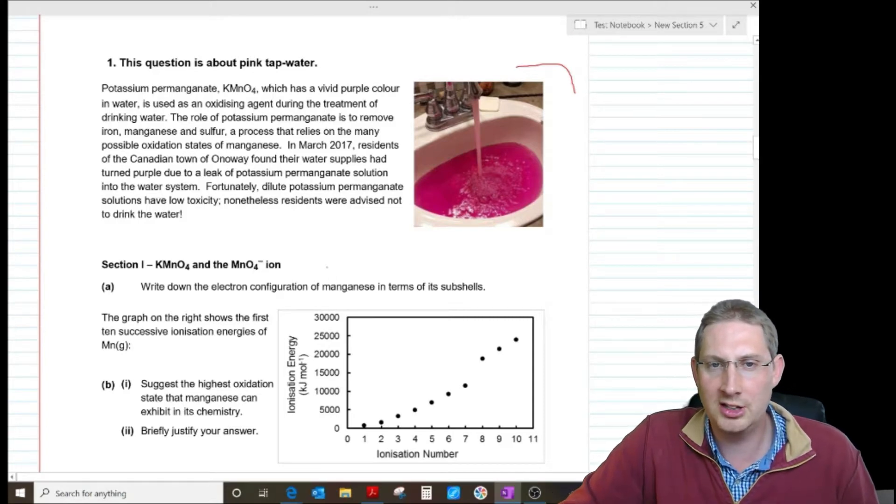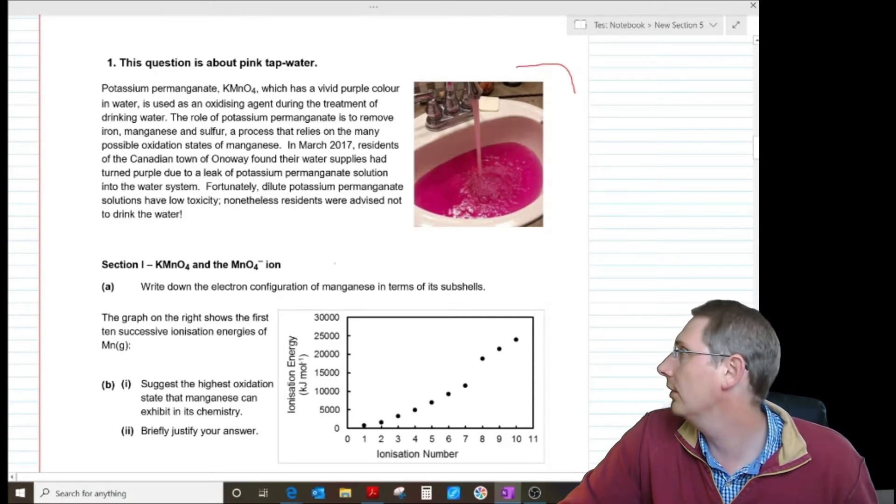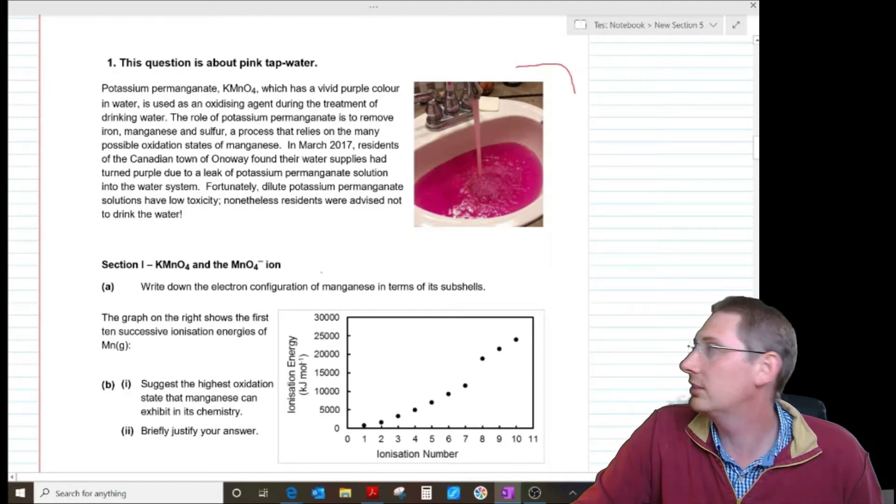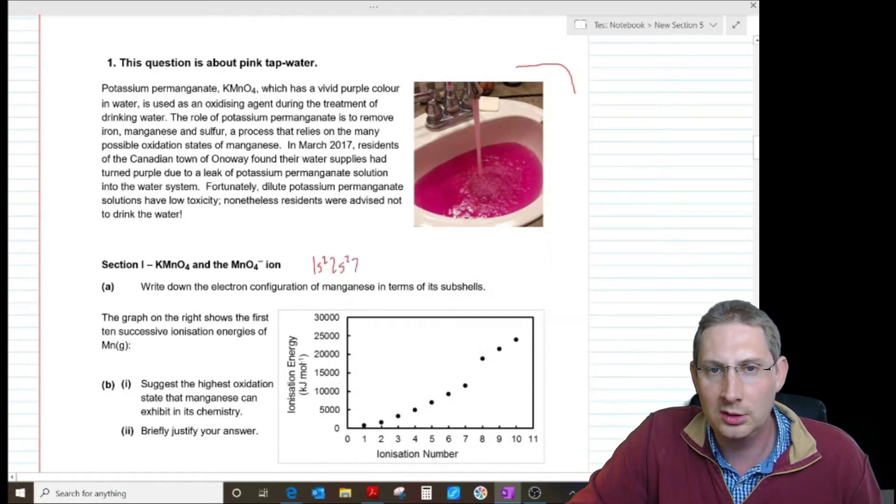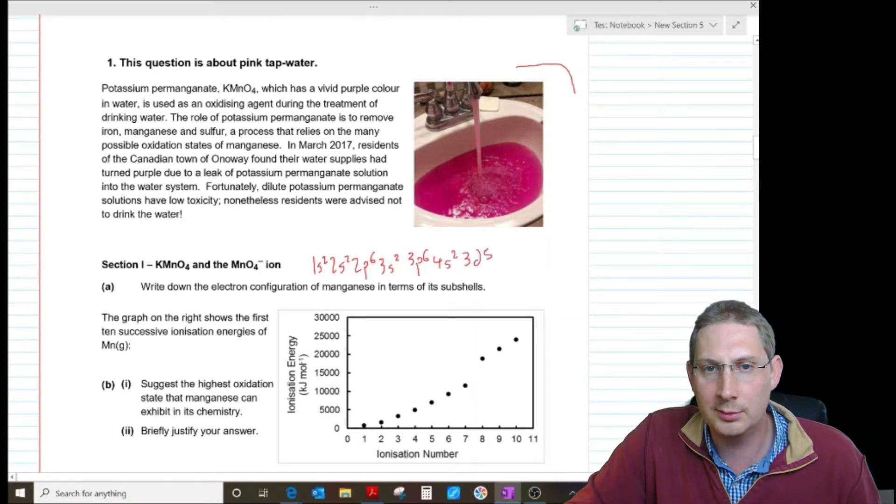Write down the electronic configuration of manganese in terms of its subshells. Looking up on the periodic table it's element number 25. 1s2, 2s2, 2p6, 3s2, 3p6, 4s2, 3d5 and that should add up to 25. Two, four, ten, twelve, eighteen, twenty, twenty-five.